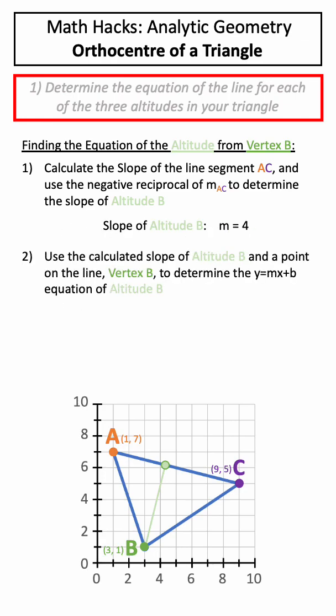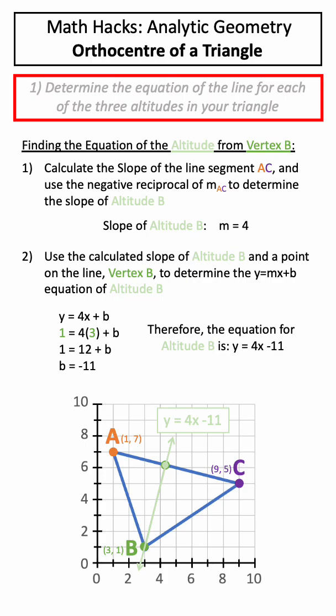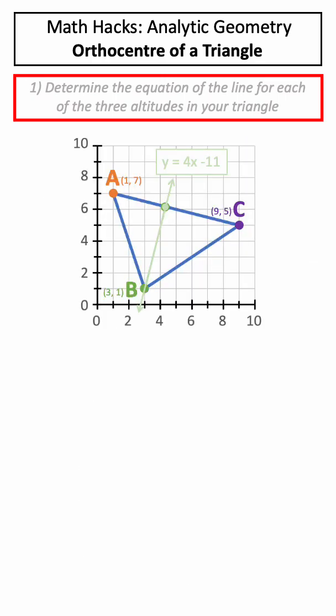The next thing we would do is use the slope as well as a point that's on the altitude, such as vertex B, and this will allow us to solve for the full equation of altitude B. We can then follow the exact same steps to determine the equation for the other altitudes of our triangle.